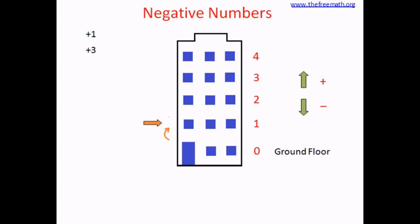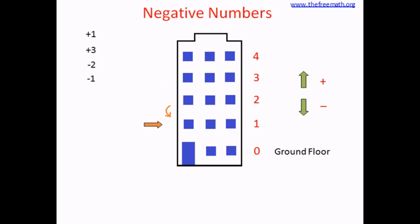If the next number is plus three, you climb up three floors and reach floor number four. The next instruction is minus two — that means you come down two floors and reach the second floor. Then minus one means you come down one more floor and reach the first floor. Next is minus two — but how do you go down two floors from the ground floor?